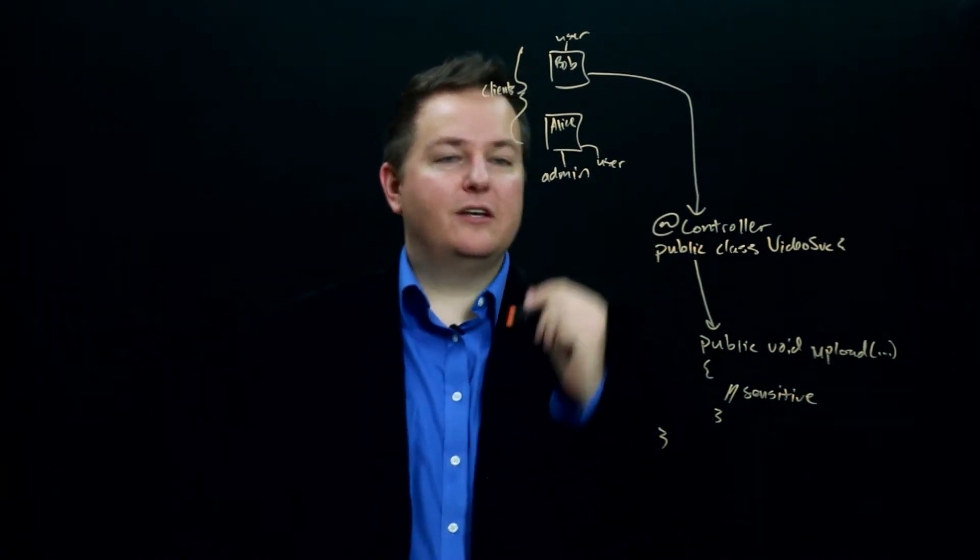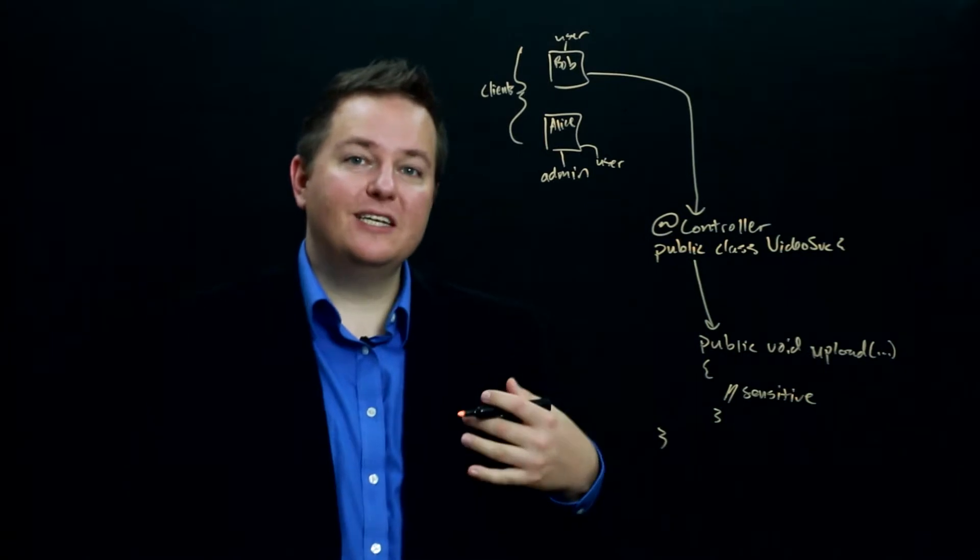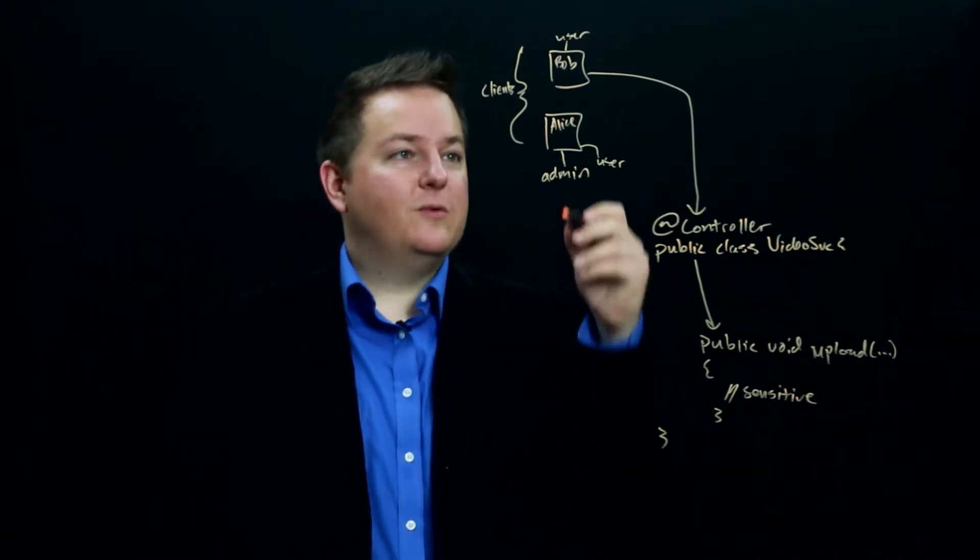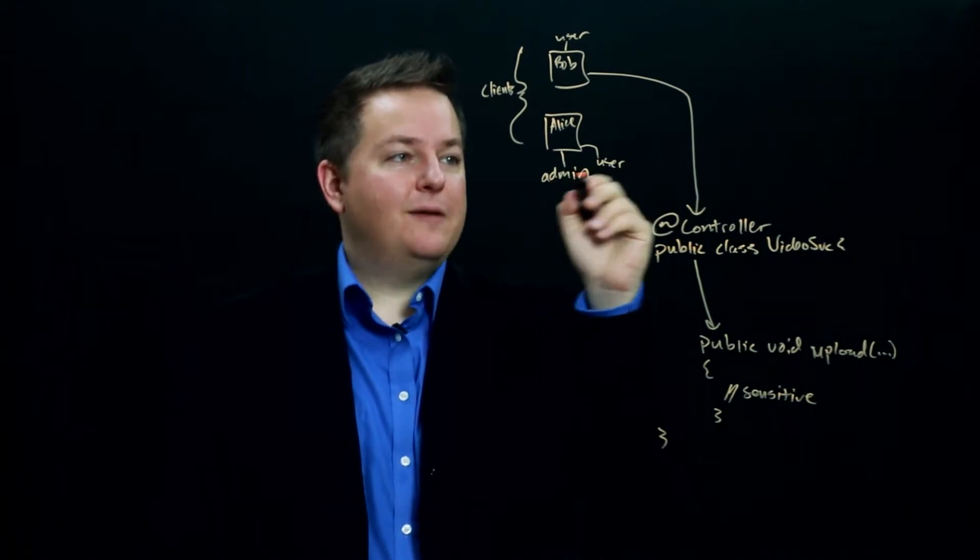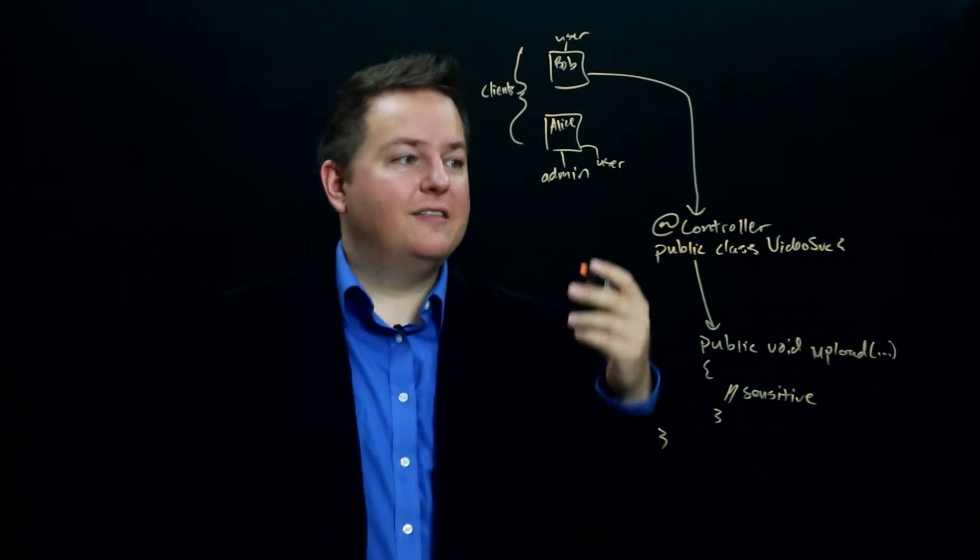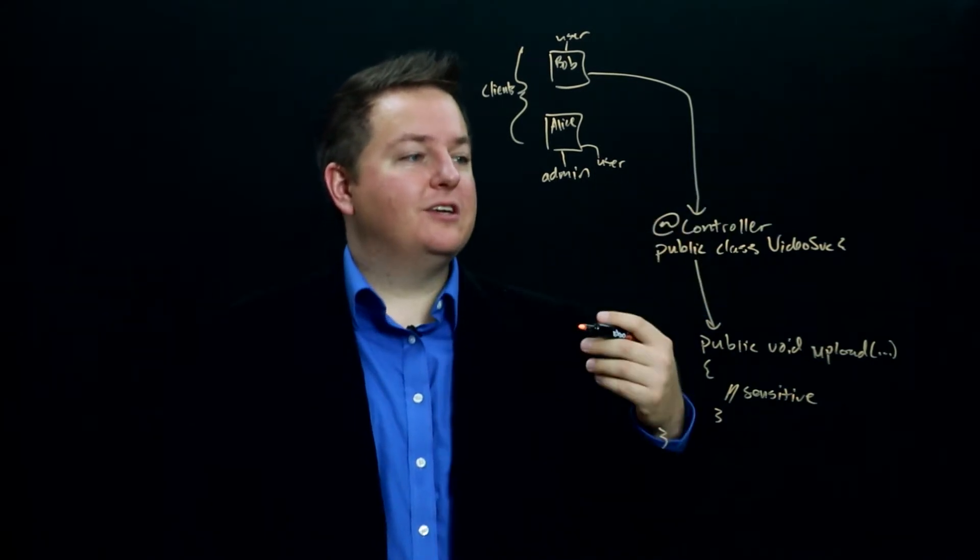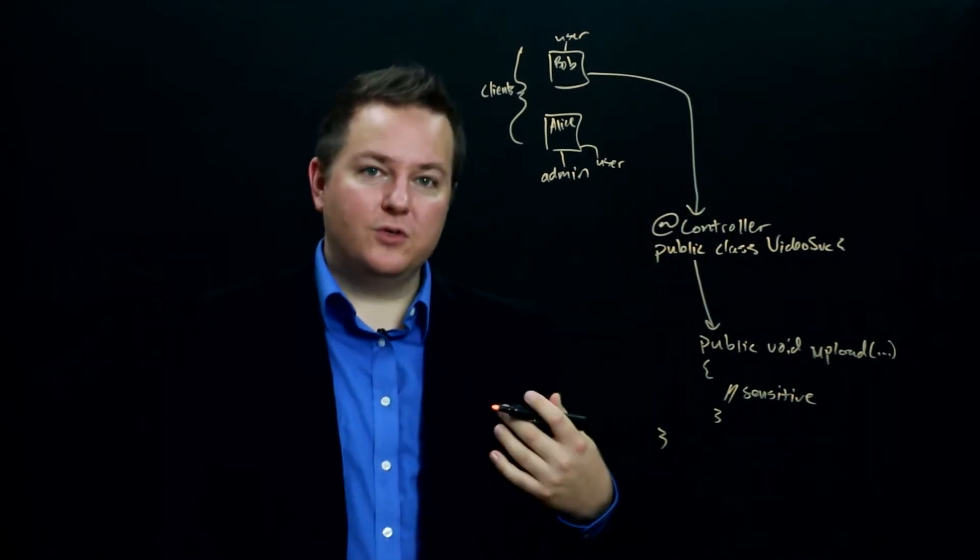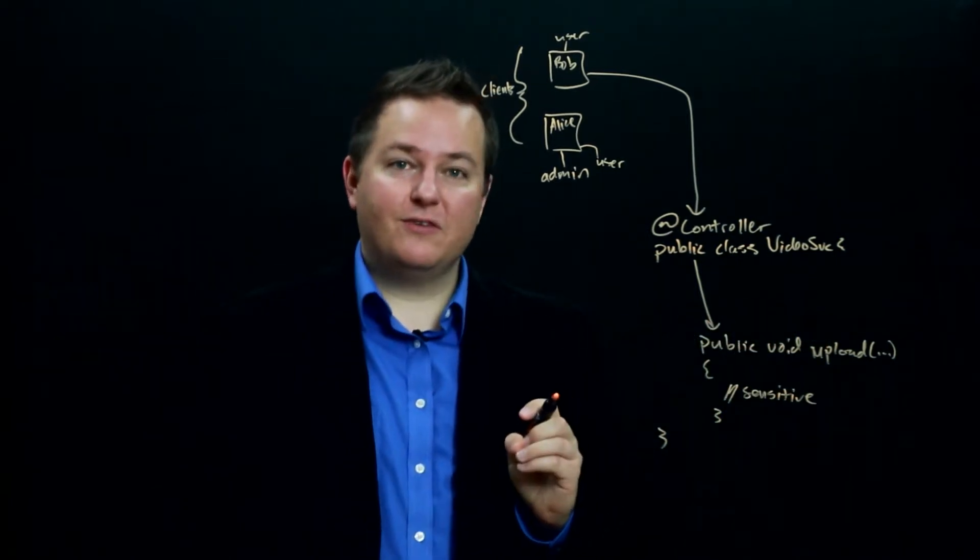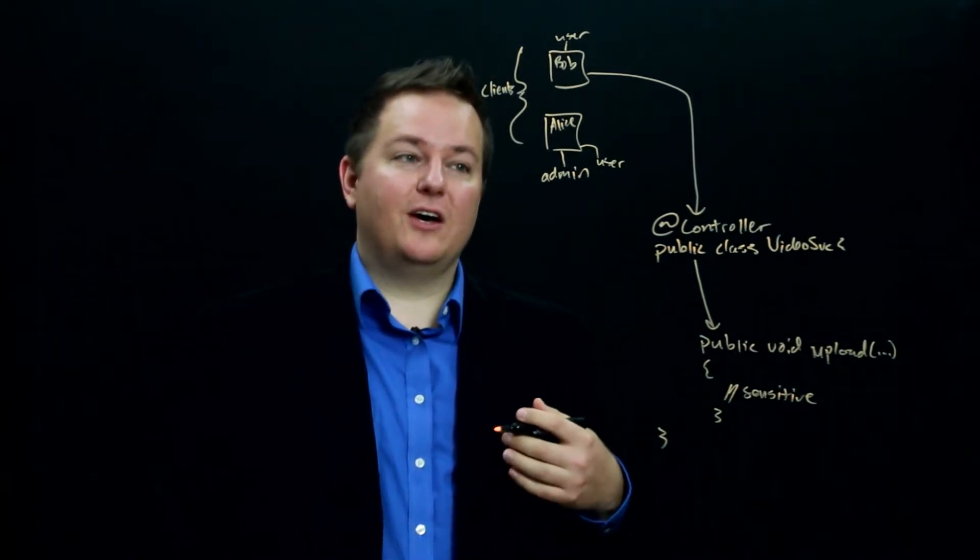One of the things that Spring Security provides for us is this ability to associate roles with different users. So we can say this user is an admin and a user whereas Bob is just a user, and then Spring will automatically go and look at rules that we provide based on who can invoke different methods based on their role.